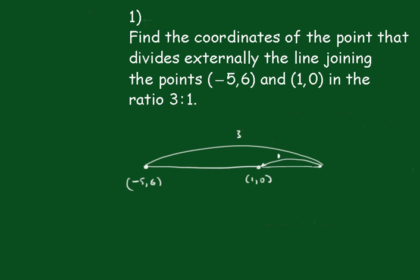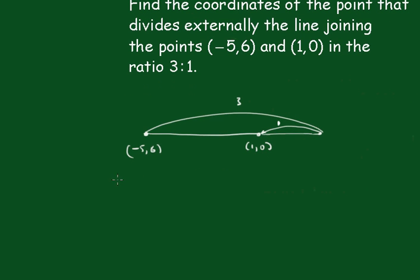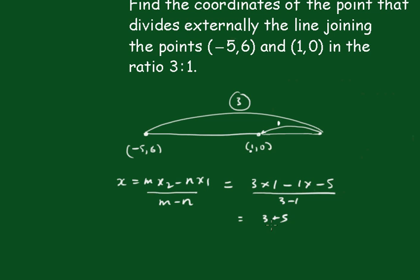Now, let's settle up. So x equals mx2 minus nx1 over m minus n, which equals 3 times the 1 minus the 1 times the negative 5, over 3 minus 1. And that's going to be 3 plus 5 over 2, which equals 4.